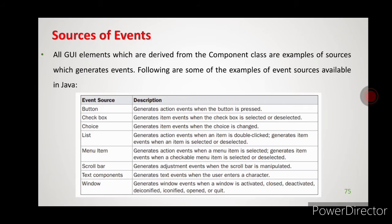Next is scroll bar. With a scroll bar we do some adjustment. While reading a document, by using scroll bars you can scroll and read the document — at that time an adjustment event will be generated. Scroll bar is also an example for an event source.